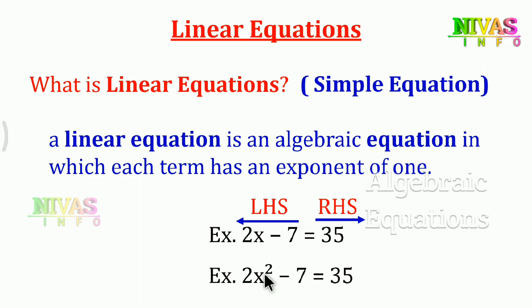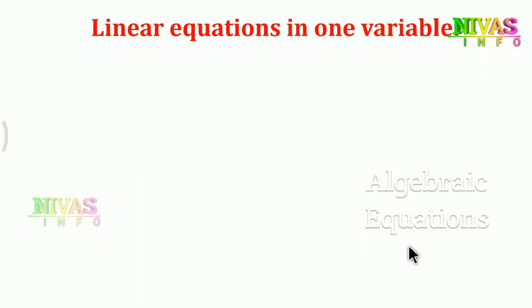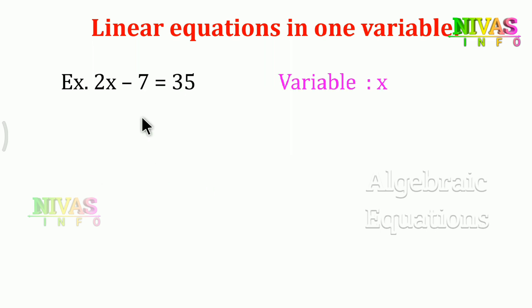So these are linear equations. Now, the topic is linear equations in one variable. If you observe linear equations, there are variables and constants. Let's look at an example: 2x minus 7 is equal to 35. There are variables and constants here. Variables are alphabets — like x — whose value is something that can change.